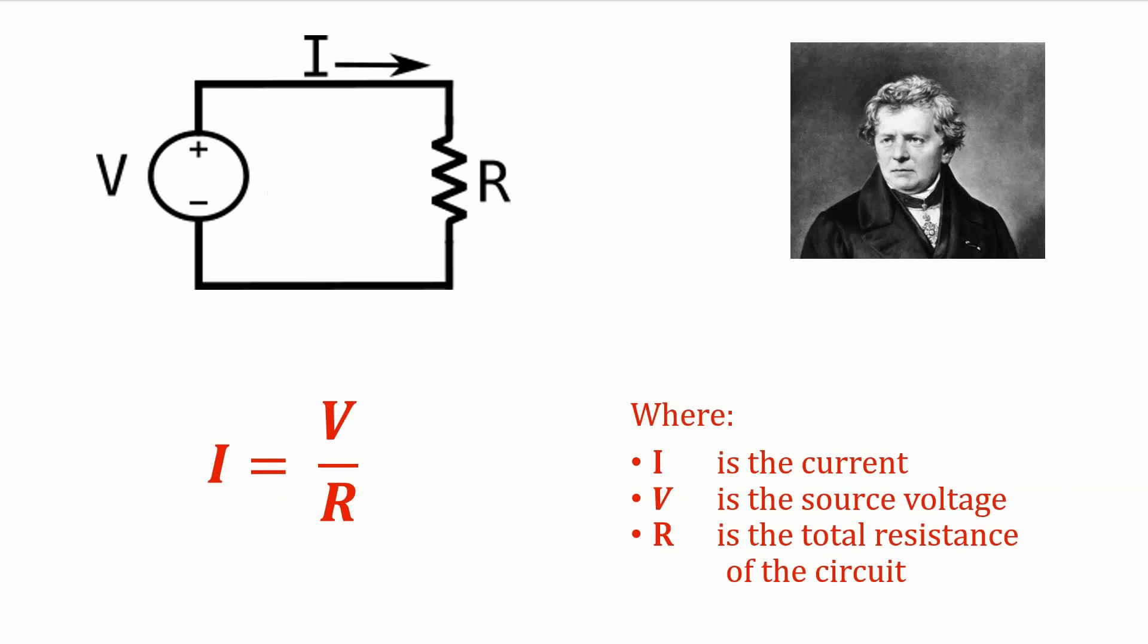In its most general form, Ohm's Law looks like this. I equals V over R, current equals voltage divided by resistance. And that gives you the 60 second, 90 second background on the origins of Ohm's Law. Thanks so much for watching. See you next time.